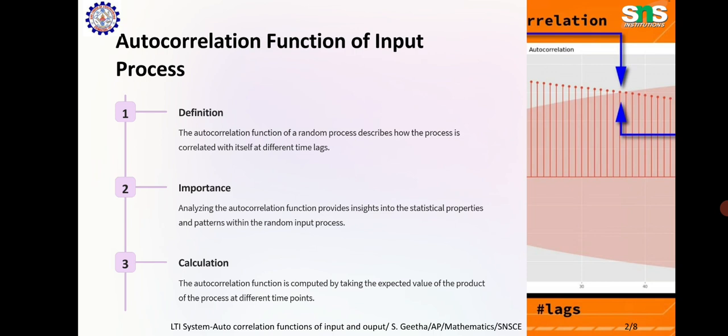Autocorrelation function of the input process. Definition: The autocorrelation function of a random process describes how the process is correlated with itself at different time lags. Importance: Analyzing the autocorrelation function provides insight into the statistical properties and patterns within the random input process. Calculation: The autocorrelation function is computed by taking the expected value of the product of the process at different time points.